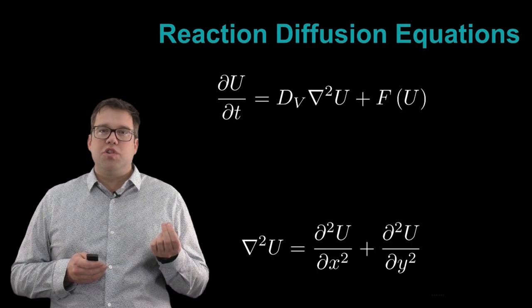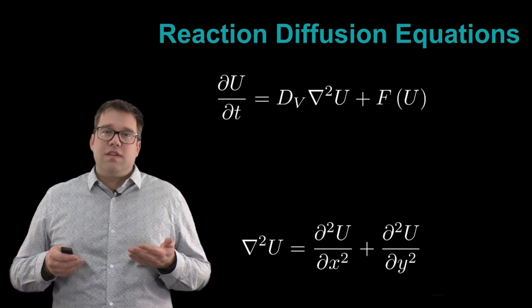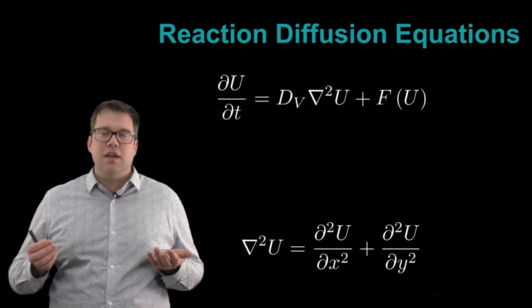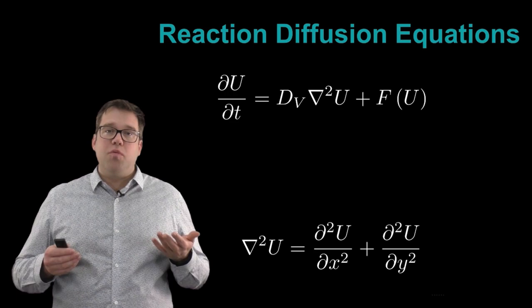Now looking at this other term F, what this is really doing is trying to describe the reaction of U everywhere in space. And so this reaction could be because there are sources of U, because there are sinks of U, because U has some natural decay rate, all of which could be put in an equation like this to balance or interact with diffusion in some interesting way.